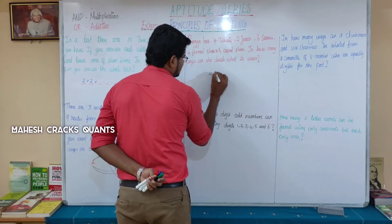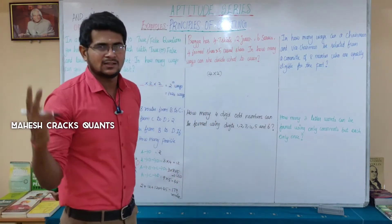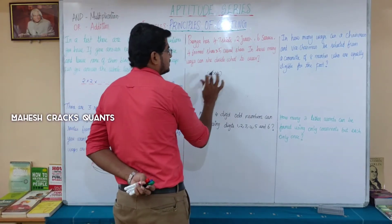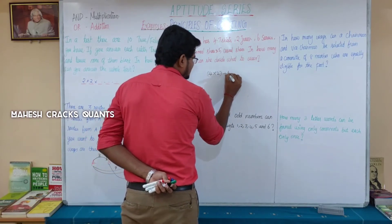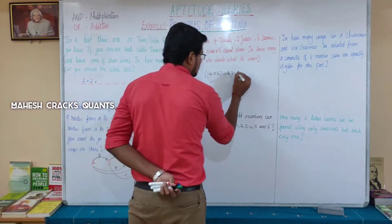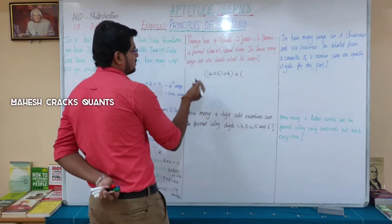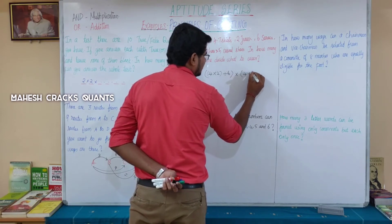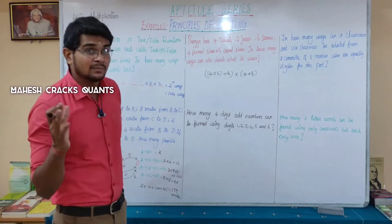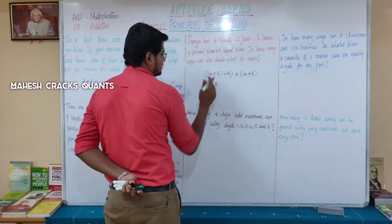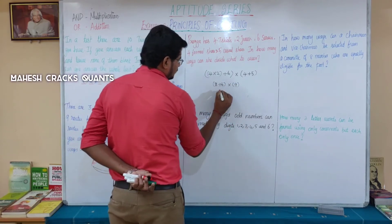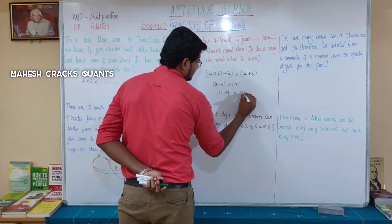Four T-shirts and two jeans: four into two gives eight ways to pair them. And there are six sari ways. So top wear choices: eight plus six is fourteen ways. For shoes, casual shoes are five and formal shoes are four, so four plus five gives nine ways. Total: fourteen into nine is one hundred and twenty-six ways.